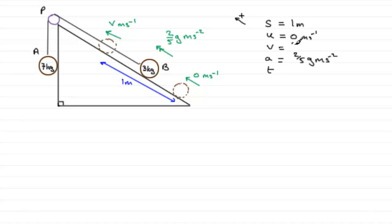So we just need to find out V. What equation are we going to use? Well, it's got to be V squared equals U squared plus 2AS.